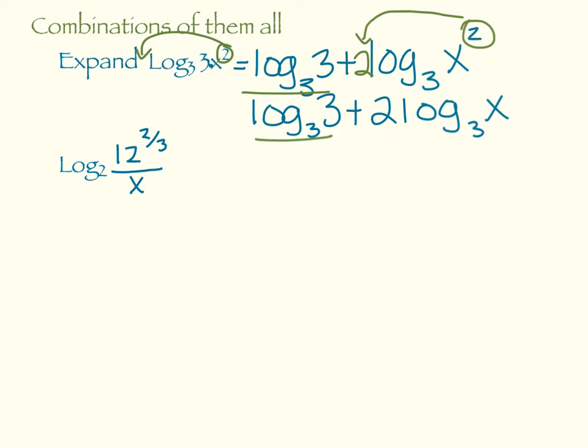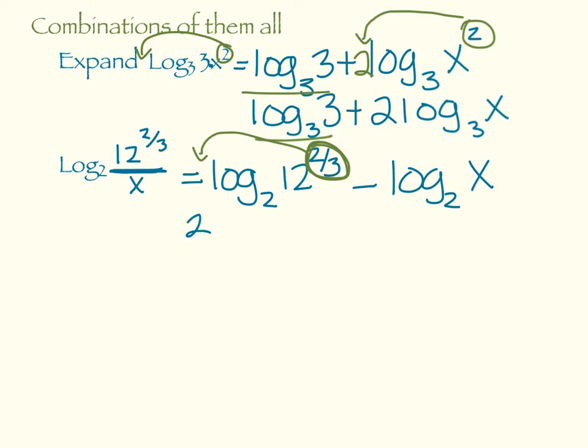Here's another example. Log base 2 of 12 to the 2 thirds power all over x. Notice x is not being raised to the 2 thirds power, so I have to deal with this division first. So that's log base 2 of 12 to the 2 thirds minus log base 2 of x. And then I can take this exponent, the 2 thirds, nothing special with the fact that it's a fraction, just move it all into the front. So we have 2 thirds log base 2 of 12 minus log base 2 of x.